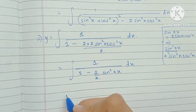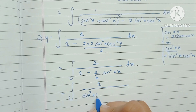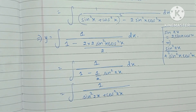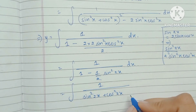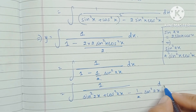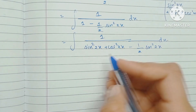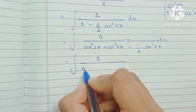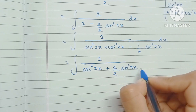Now I am going to write this 1 as sin²2x + cos²2x, because sin²x + cos²x equals 1 and multiplying x by a constant doesn't change that — it is still 1. So this becomes minus (1/2)sin²2x, and sin²2x minus half of sin²2x becomes half of sin²2x, so we have cos²2x plus (1/2)sin²2x.